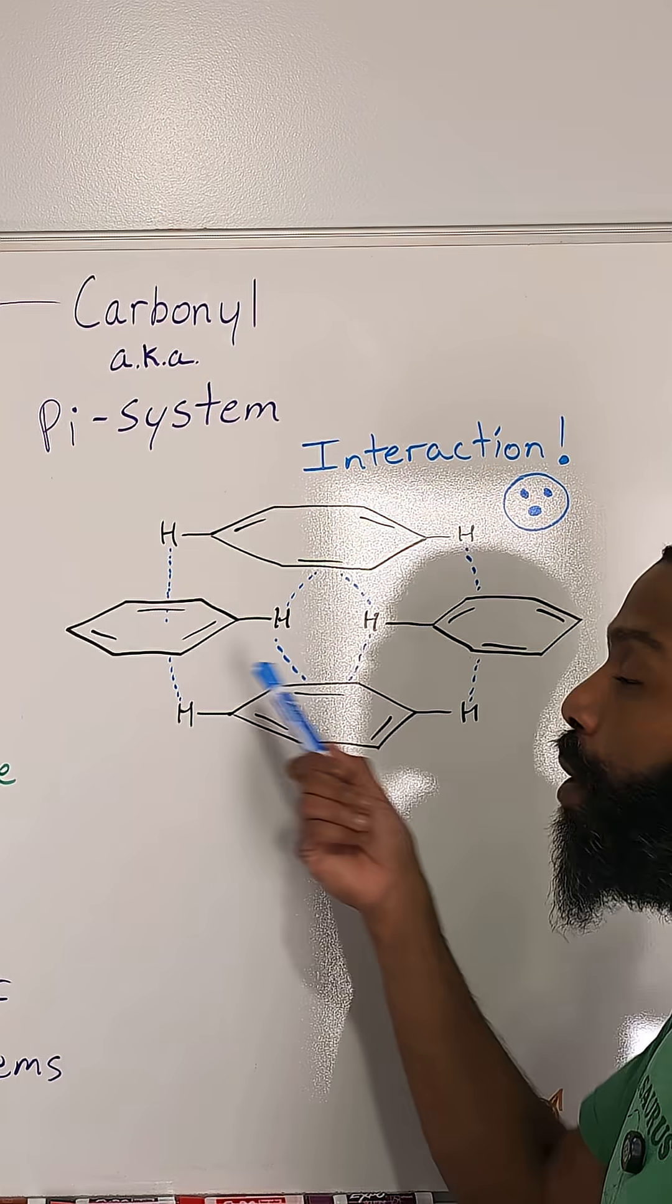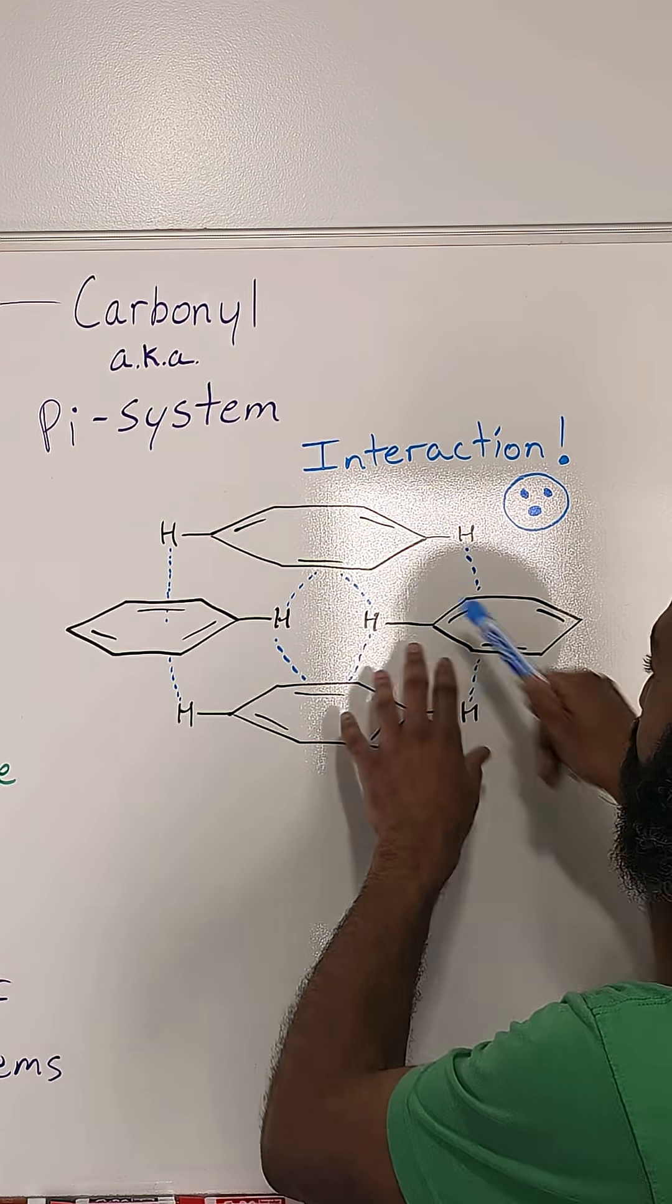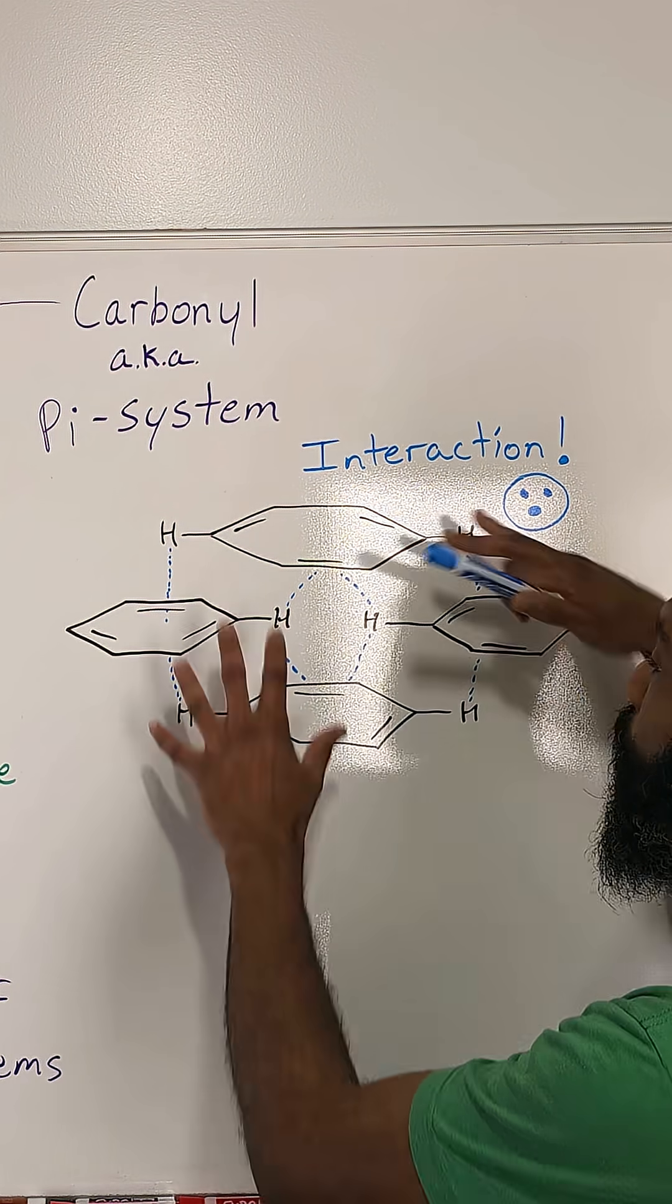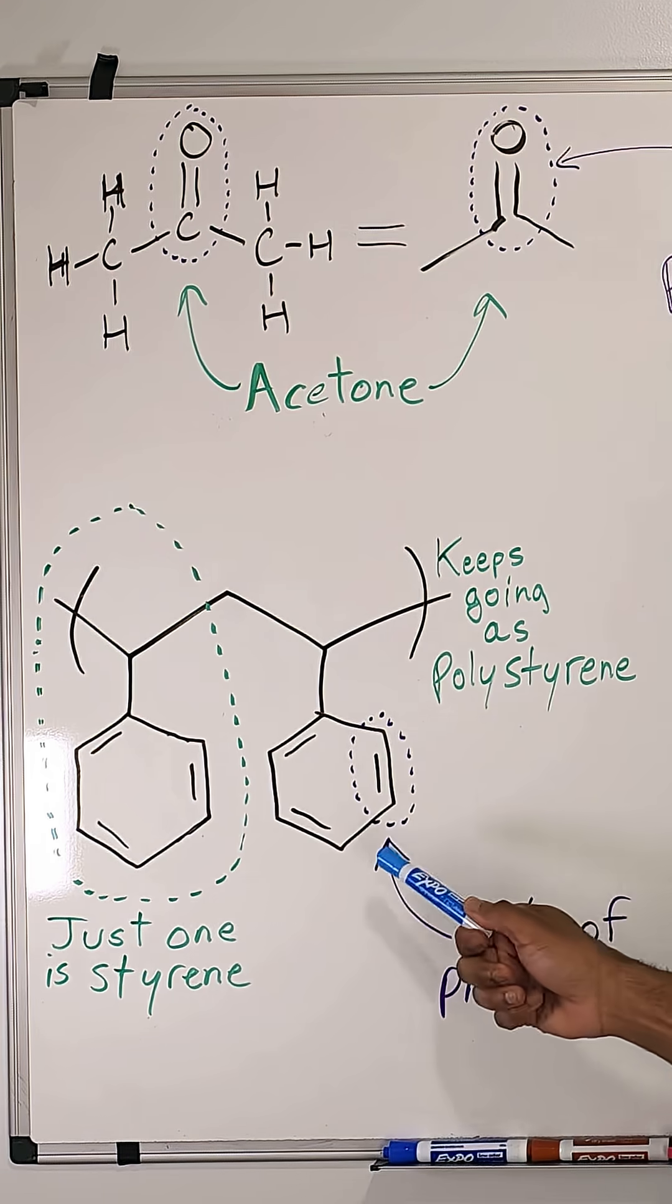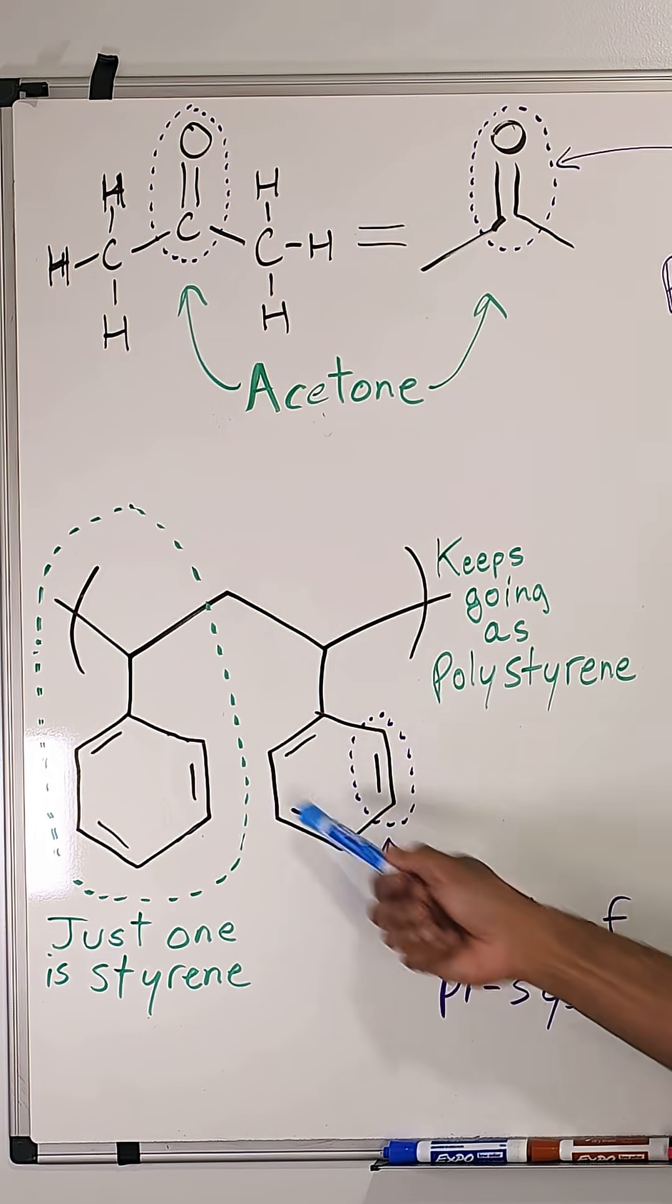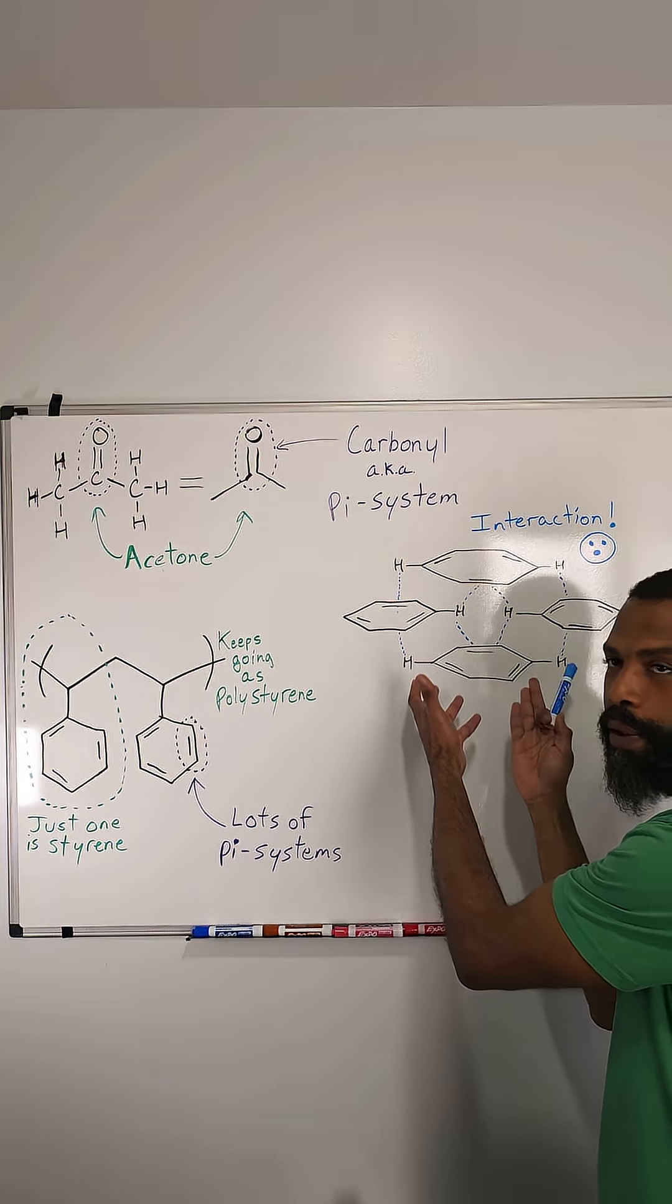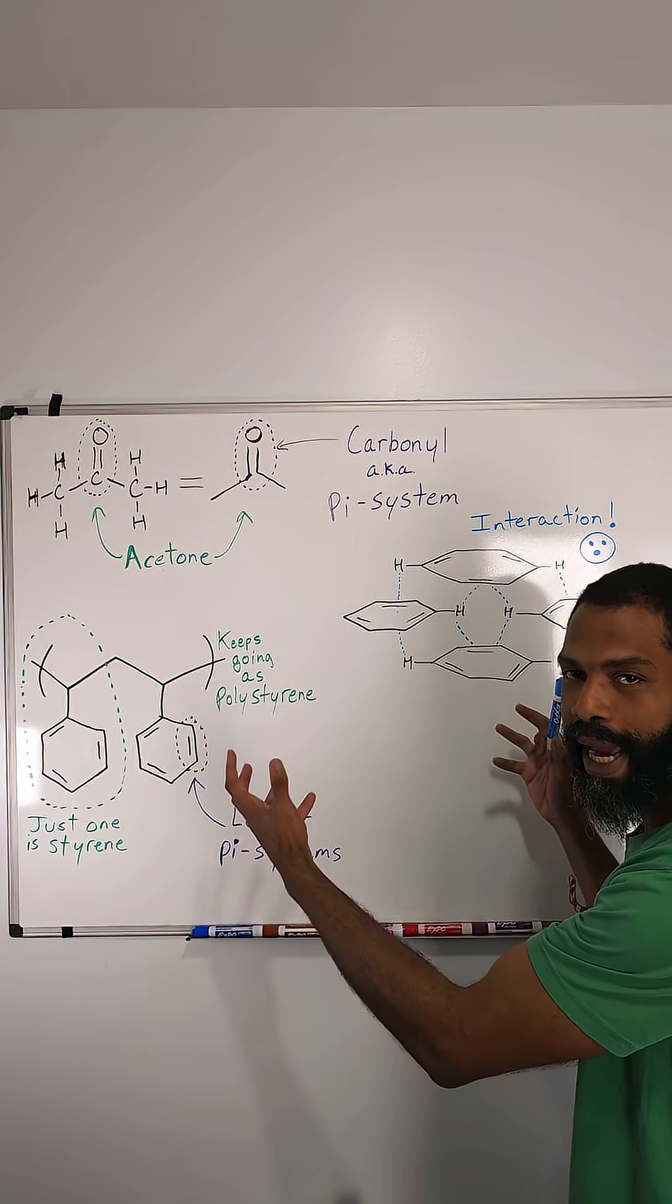One example is called pi stacking, where these pi systems, these double bond systems, will arrange and interact with each other. Styrene and polystyrene have a bunch of these pi systems, so you can imagine they do a similar thing, and that's what traps the air.